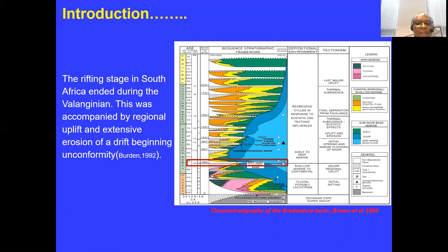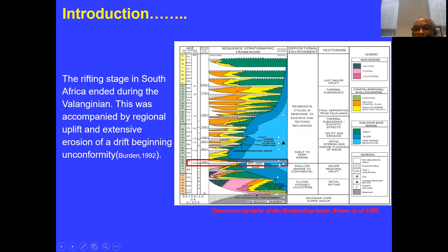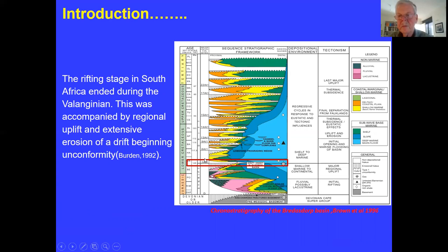The sequence stratigraphy framework of the Bredasdorp Basin is presented, indicating the target zone within the lower Cretaceous, shown by a rectangle. The rifting stage in South Africa ended during the Valanginian period, accompanied by regional uplift and erosion, defining a drift onset unconformity. The focus of this work is the lower Cretaceous section.